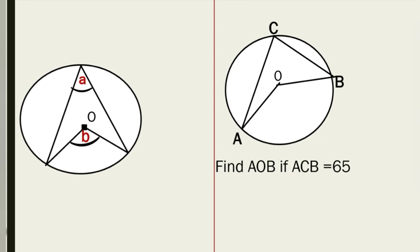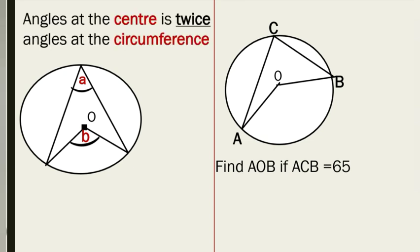Rule number 2 states that the angle at the center is twice the angle at the circumference — provided they arise from the same arc. In this diagram we have angle A at the circumference and angle B at the center, labeled O. The rule states that the angle at the center is twice the angle at the circumference, so angle B equals twice angle A.